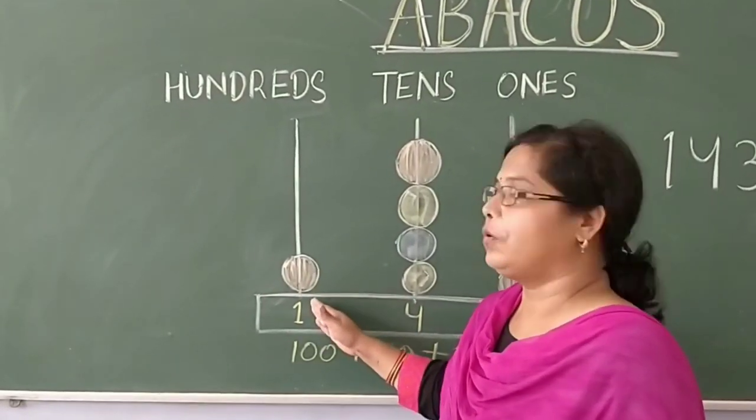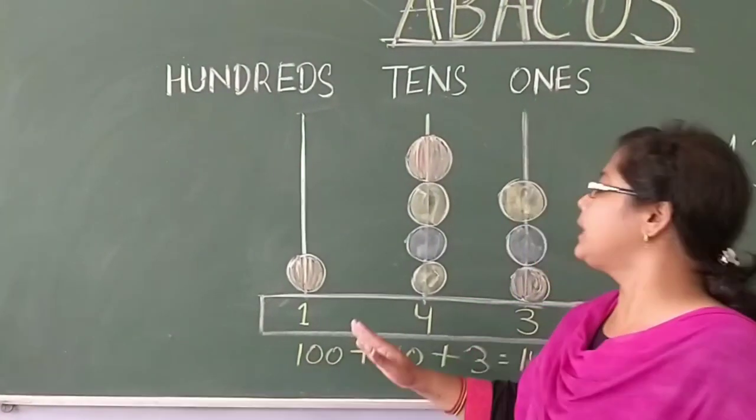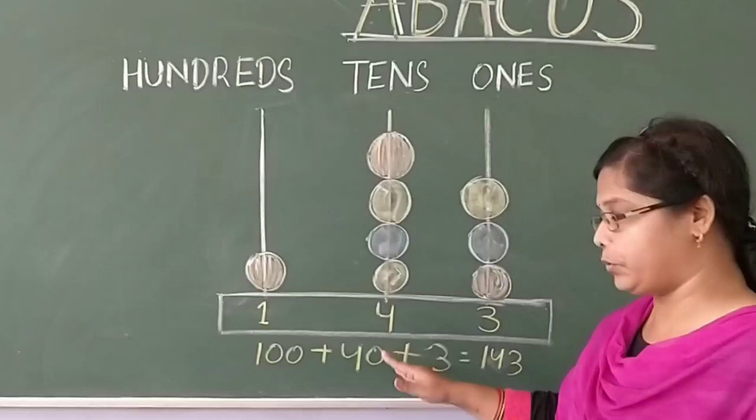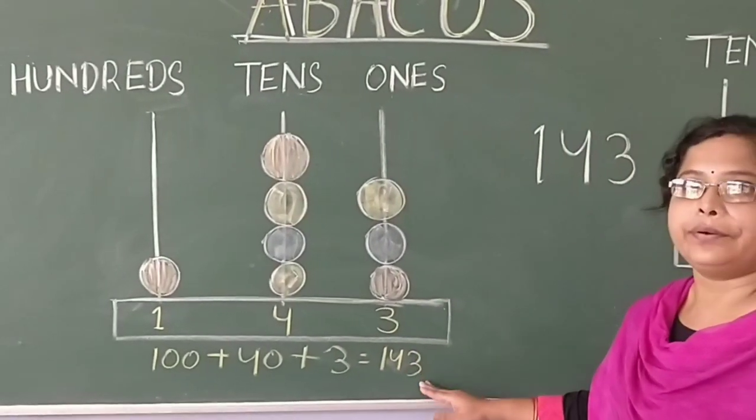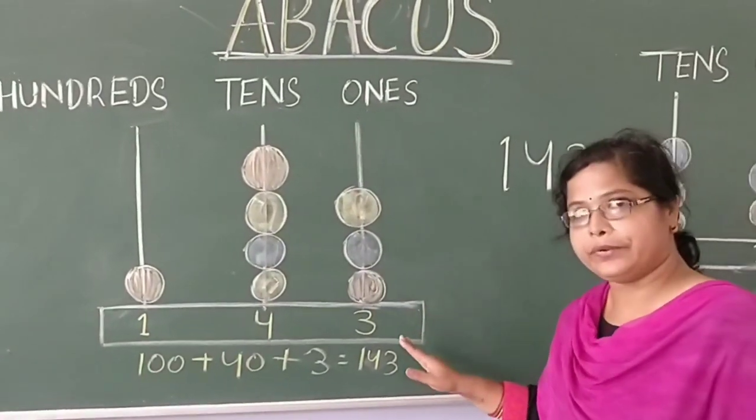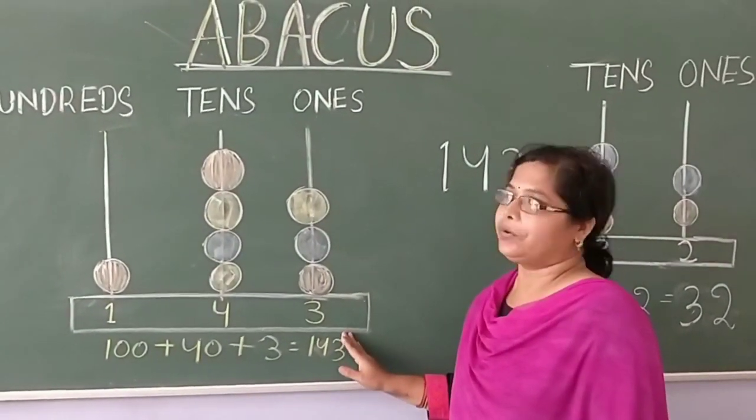So, the number is 100 plus 40 plus 3 equal to 143. So, have you learned it? Yes. Okay.